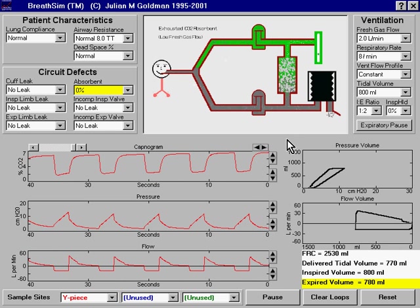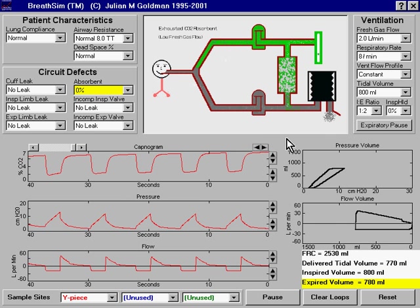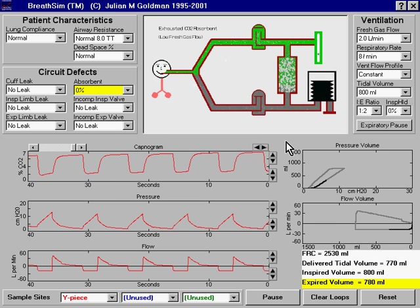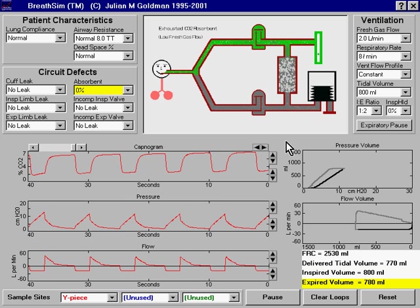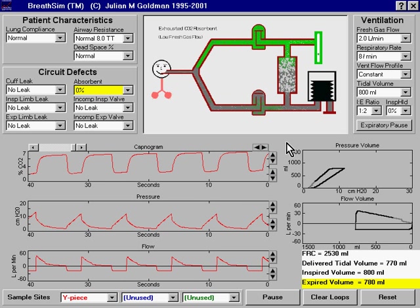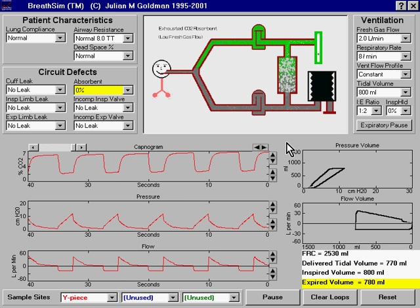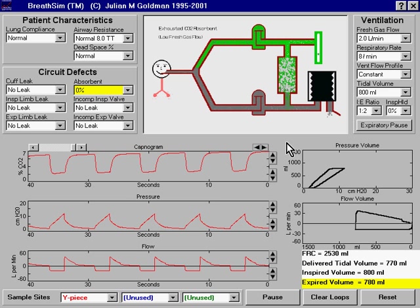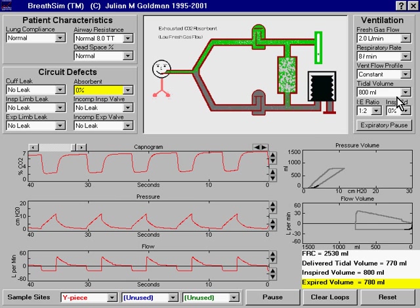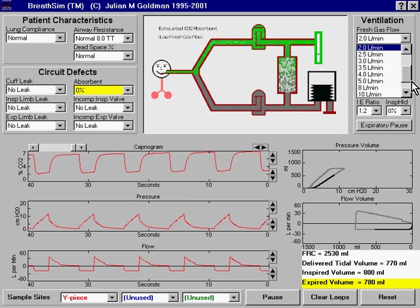Well, how do we correct this problem with the exhausted CO2 absorbent? The best thing to do, of course, is to change the CO2 absorbent. However, what many people do if there's only a short time left on the anesthetic, or if for some reason no absorbent is available, is they increase the fresh gas flow to the breathing system.